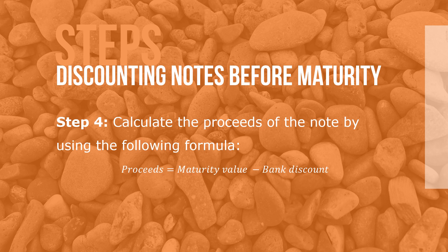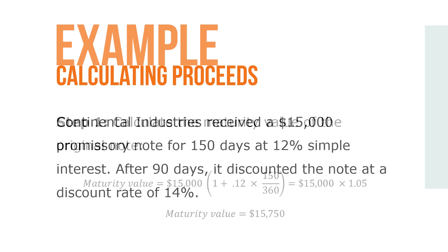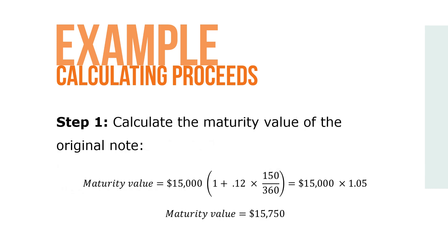Let's take a look at an example. Continental Industries received a $15,000 promissory note for 150 days at 12% simple interest. After 90 days, it discounted the note at a discount rate of 14%.